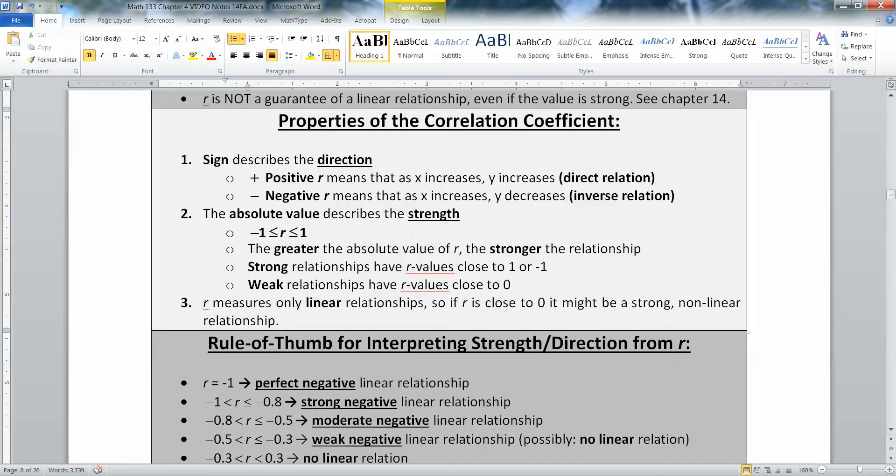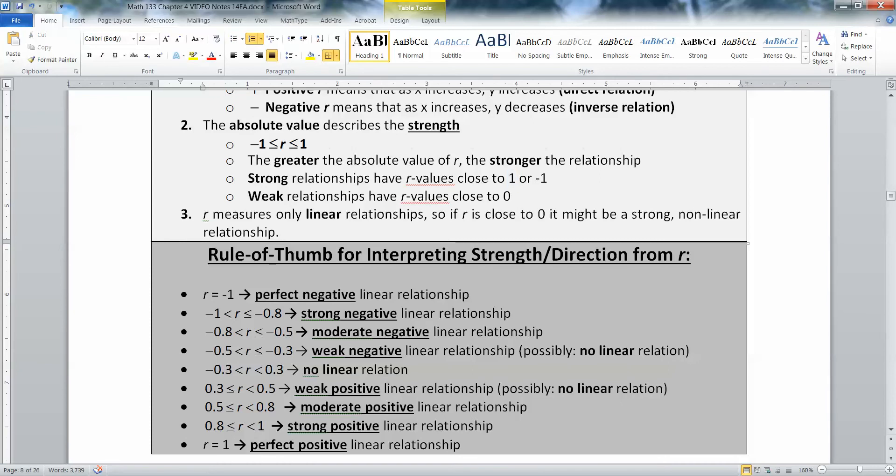The absolute value of R describes the strength. Absolute value, if you remember from algebra class, means when you take the absolute value, it will turn it positive. The bigger the absolute value of R, the stronger the relationship is. That means if you have an R value that's close to 1 or negative 1, like negative 0.9 or positive 0.9, those are both close to 1, that means it's a strong relation. Weak relationships will actually have R values that are close to 0, and again, it can be positive or negative. R measures only linear relationships. So if R is close to 0, it might be a strong non-linear relationship. You might get an R value that's 0, but it doesn't mean there's no relation. It means it wasn't a linear relationship.